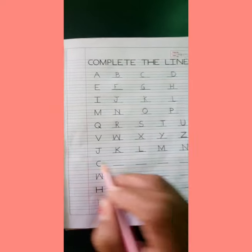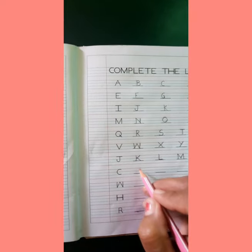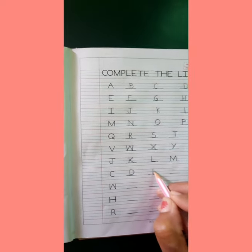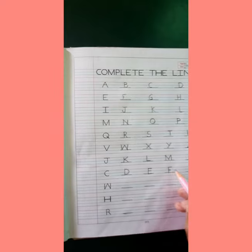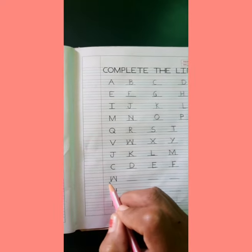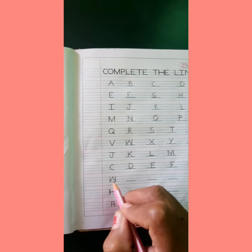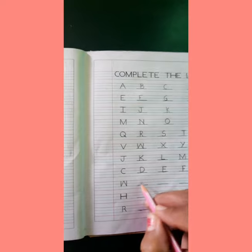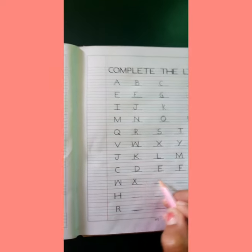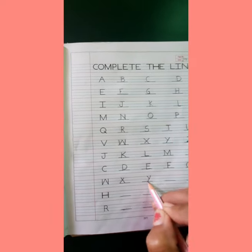Now after N, children. What letter is this? C. C, D. E. F. G. Now after G, children. What letter is this? W. W. Y. Z.